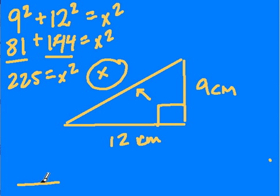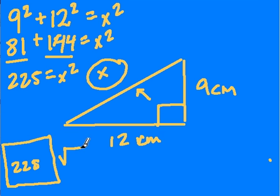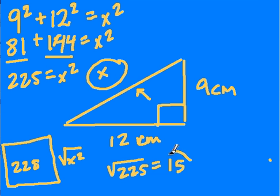So again, when we find x squared we're finding a square and the area of that square is 225. Well, a side of a square, as we talked about, is the square root of this area right here of x squared. So we take the square root of 225, since that equals x squared, and we get 15 and that equals x.